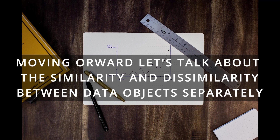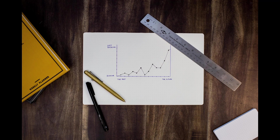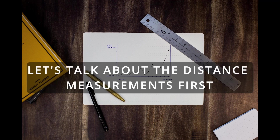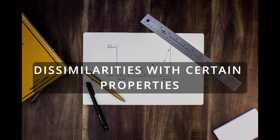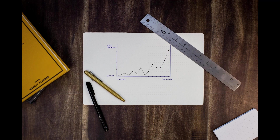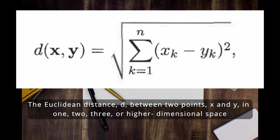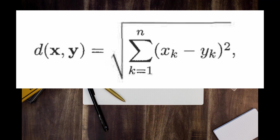Moving forward, let's talk about similarity and dissimilarity between data objects and distance measurements. Distance tells you similarity or dissimilarity with certain properties. The first distance measure is the Euclidean distance. This is the distance between two points x and y and it can be in one, two, three, or higher dimensional spaces. It is calculated by the formula on screen, where n is the number of dimensions and x_k and y_k are the respective attribute components for x and y in that particular dimension.